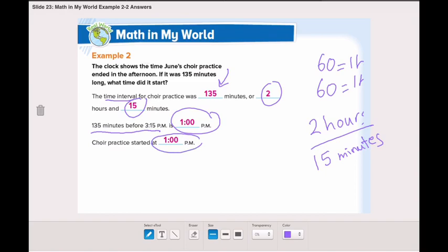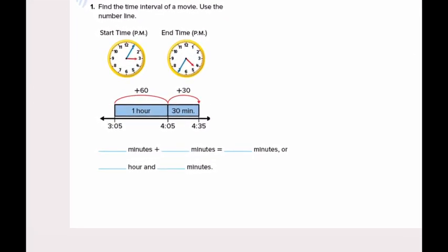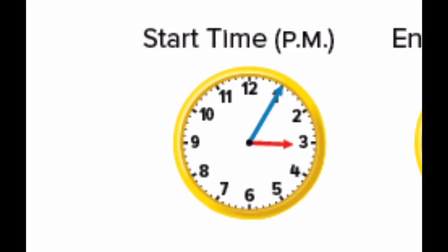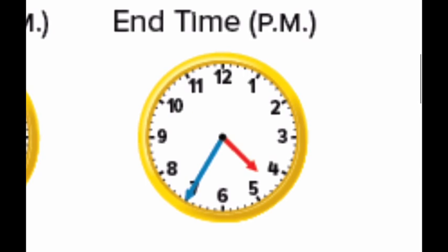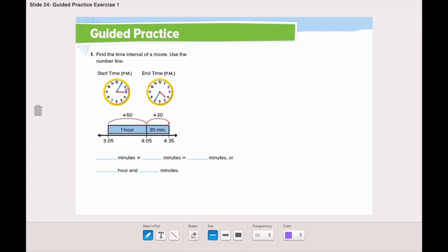Moving to the guided practice. Find the time interval of a movie. Use the number line. It says that the starting time is 5 minutes past 3, and the ending time is 35 minutes past 4. The hour hand is on the 3. The minute hand is on the 1, which is 5. So, the start time is 3:05 or 5 minutes past 3. And the ending time, the hour hand is between 4 and 5, so it's 4.